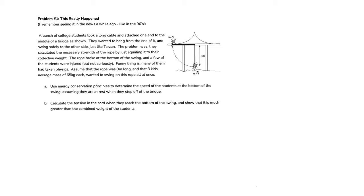A bunch of college students took a long cable and attached one end to the middle of a bridge as shown. They wanted to hang from the end of it and swing safely to the other side, as all college students would want to do. The problem was they calculated the necessary strength of the rope by just equaling it to their collective weight, which we know is not what you're supposed to do.